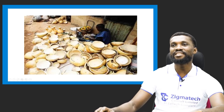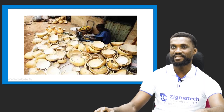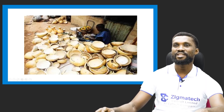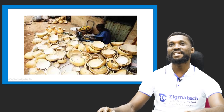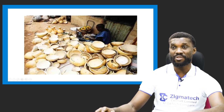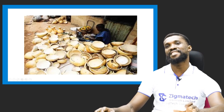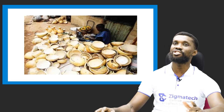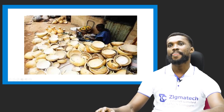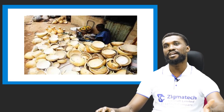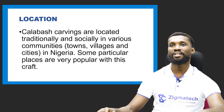Here is a lady making the fresh calabash into plates and household utensils. You can see how the color looks. When fresh it is usually green, but by the time it undergoes the processes, it changes color to yellow ochre, yellow, raw umber, or brown depending on the nature of the calabash.